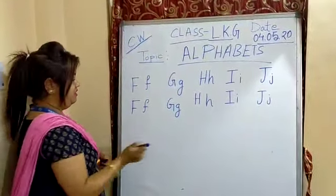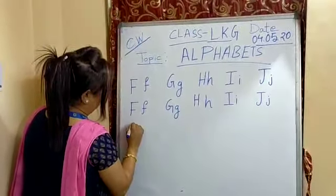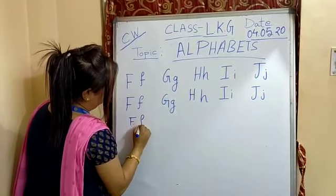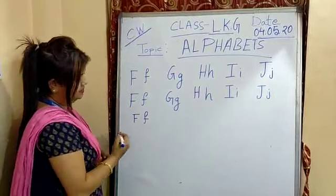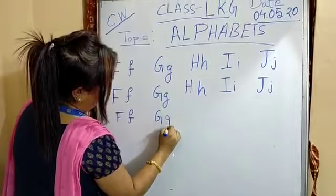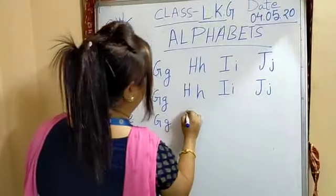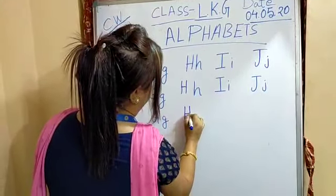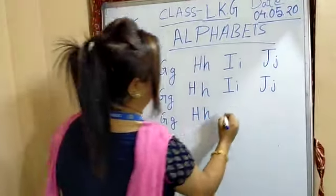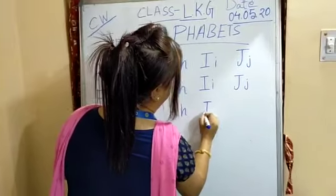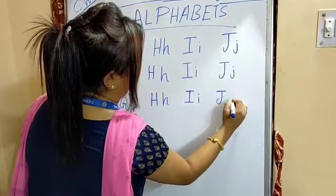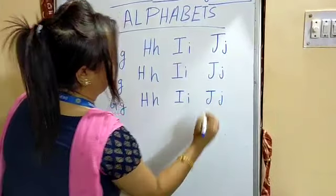Now look at the board, children. How am I writing? F, this is small f. G, small g. H, small h. I, small i. J, this is small j.